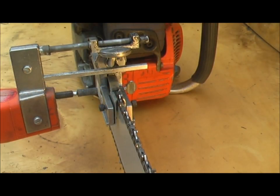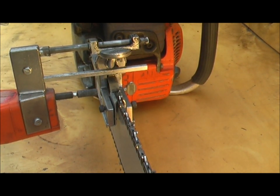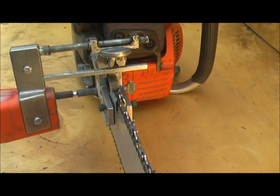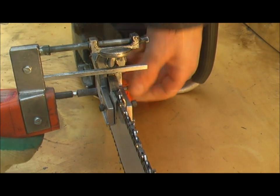That's the whole chain done. It's fully sharpened. All the depth gauges, the cutters are the same length. And you'll find when that is done like that, a finishing touch you can do now.